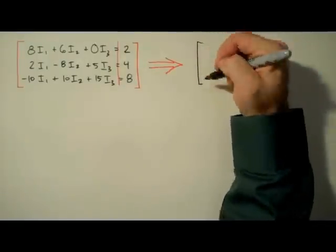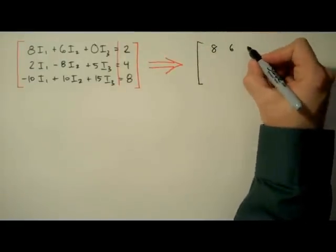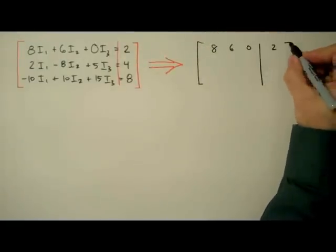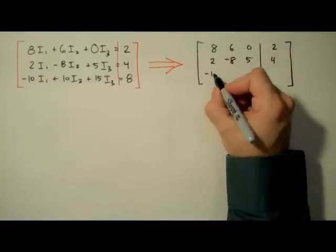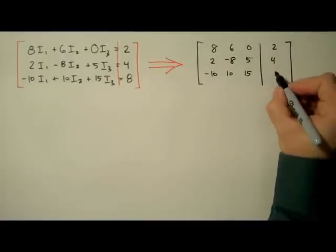So the first row of entries in our augmented matrix will be 8, 6, 0, and 2. In the second row we have 2, negative 8, 5, and 4. Third row, negative 10, 10, 15, and 8.